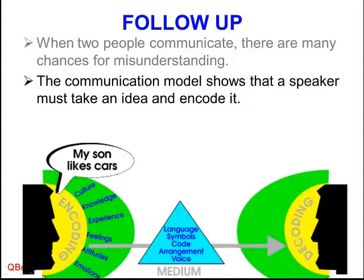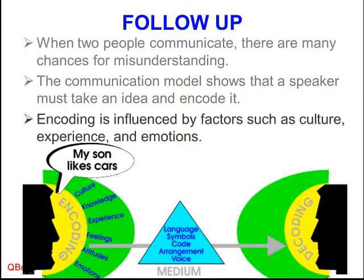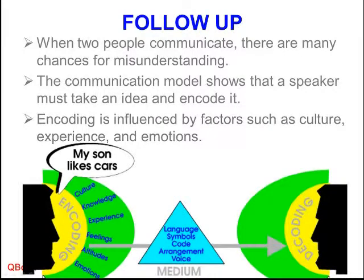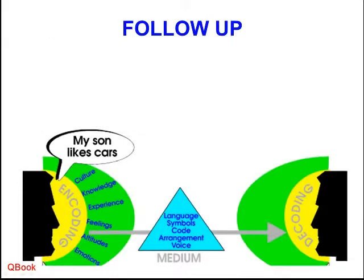So if you are feeling happy, you may say the sentence in one way. If you're feeling sad, you may say it in another way. This encoding then becomes words that you hear, words that you read, or some other form like body language. But the point is, that's what gets sent out.